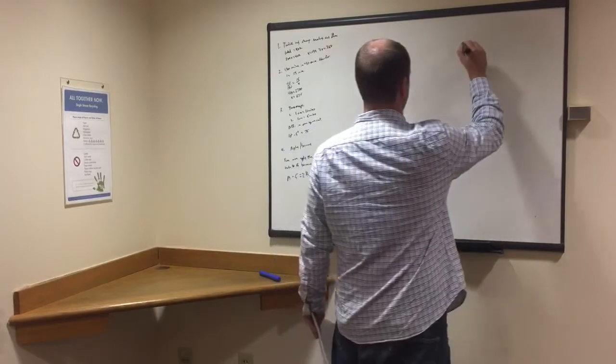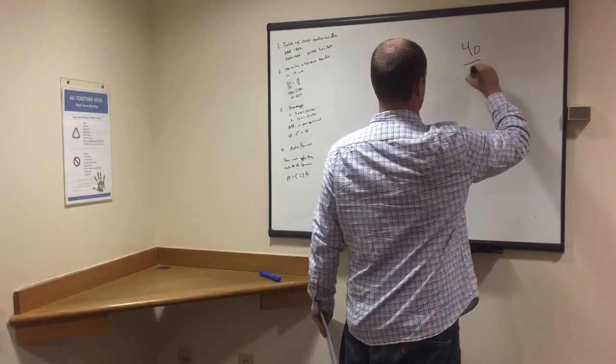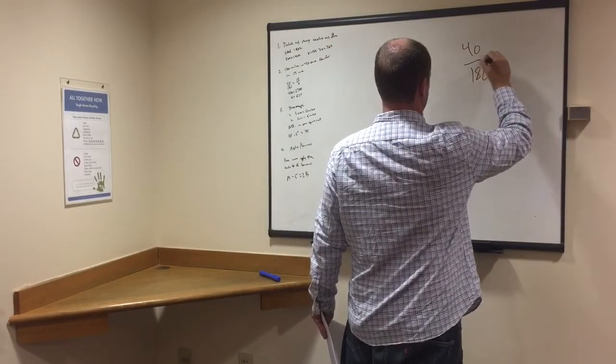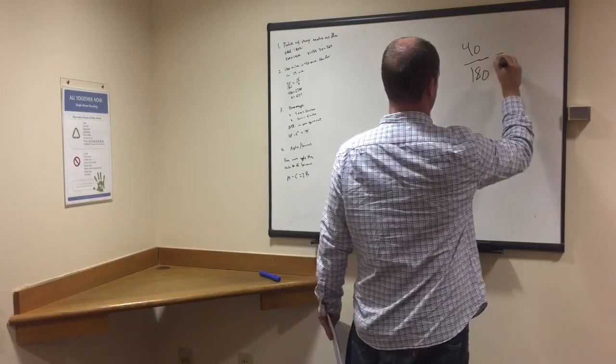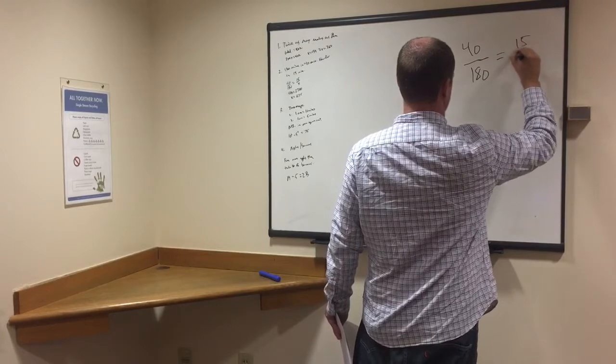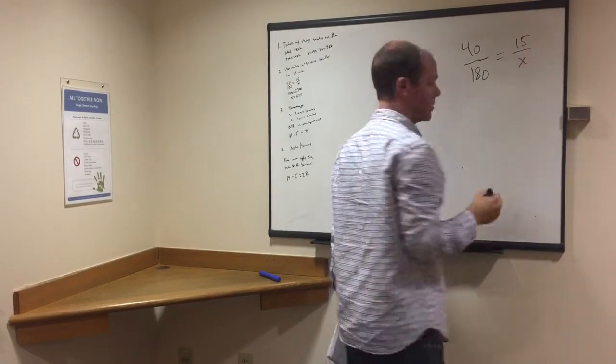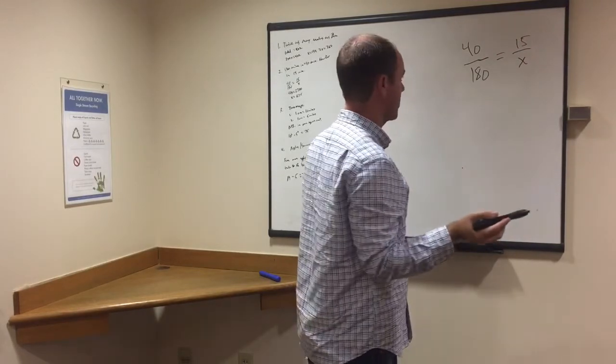Alright, so cycle formula here. So we have 40 over 180, alright, so that's 40 minutes, 180 miles, equals 15 over x. So this is really the key to make sure that we set up this formula correctly.